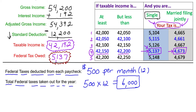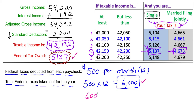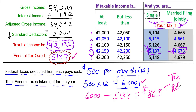You paid too much — you're only responsible for $5,137 but had $6,000 taken out. So you're going to get a refund. To figure out how much you get back, take the $6,000 that was withheld minus the $5,137 you owe from the table, and you get $863. At the end of the year you'll receive a tax refund check for $863. That's how tax refunds work.